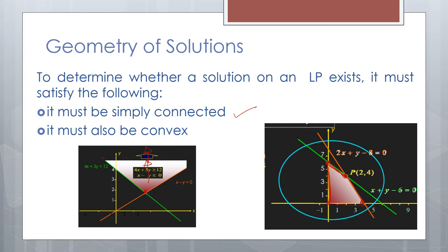A polygon is convex when none of its interior angles measure more than 180 degrees. Based on the graph, all interior angles are less than 180 degrees — both conditions are satisfied, meaning there is a solution. To find that solution, substitute the X and Y coordinates of the extreme points into the objective function.